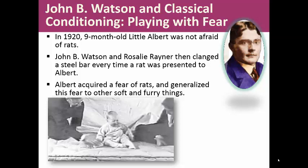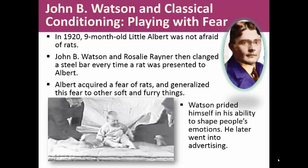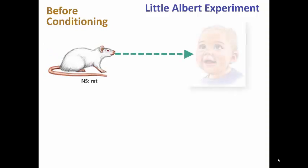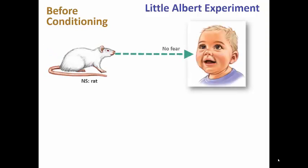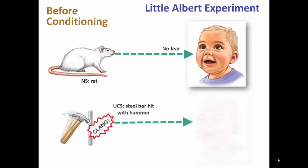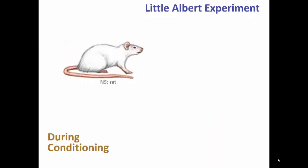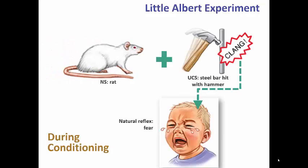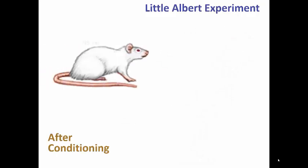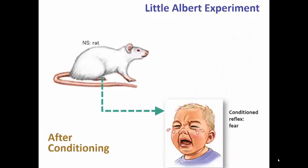This today would not be acceptable because you're inducing fears in children. Watson prided himself in his ability to shape people's emotions, and as mentioned earlier, he went into advertising. In terms of the language: before conditioning, the rat was a neutral stimulus and little Albert was not afraid. Then they paired the unconditioned stimulus — the clanging loud noise — and the unconditioned response was fear and crying. During conditioning, the neutral stimulus was paired with the unconditioned stimulus resulting in crying, and after conditioning, the neutral stimulus becomes a conditioned stimulus — every time he saw the rat, he was afraid.